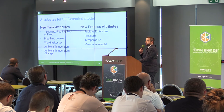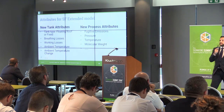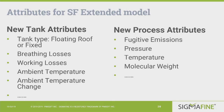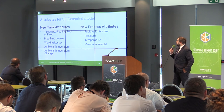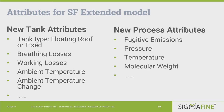Once you choose the type of calculation for loss estimation, you need to extend your standard SigmaFine template. It requires an attribute to define the roof type, an attribute for breathing losses, one for the calculation of working losses, and additional attributes that become the parameters applied in the calculations. In a similar way, for the process unit you add an attribute for the fugitive emission calculation plus all the attributes needed to perform the formula.